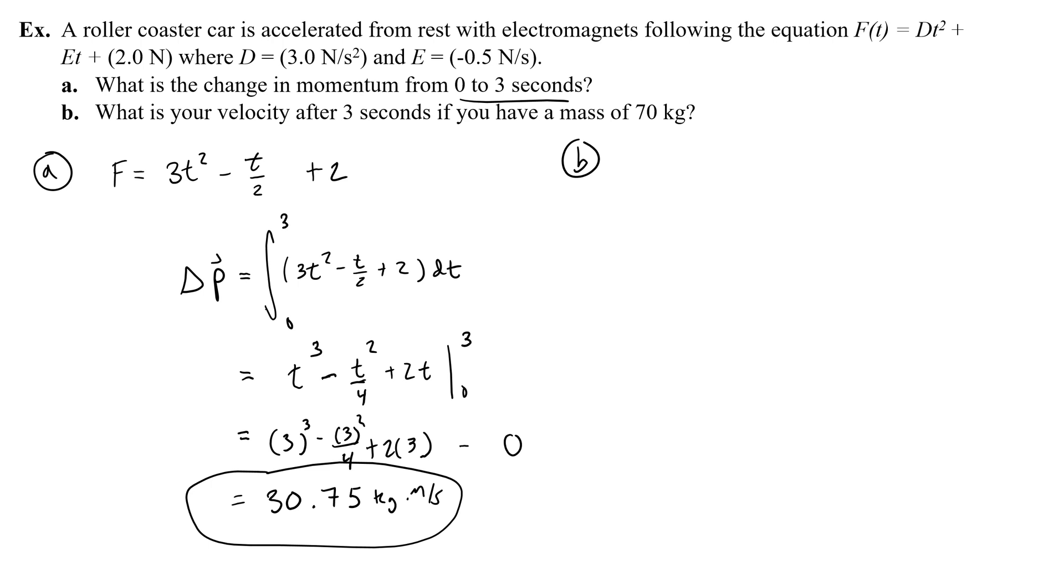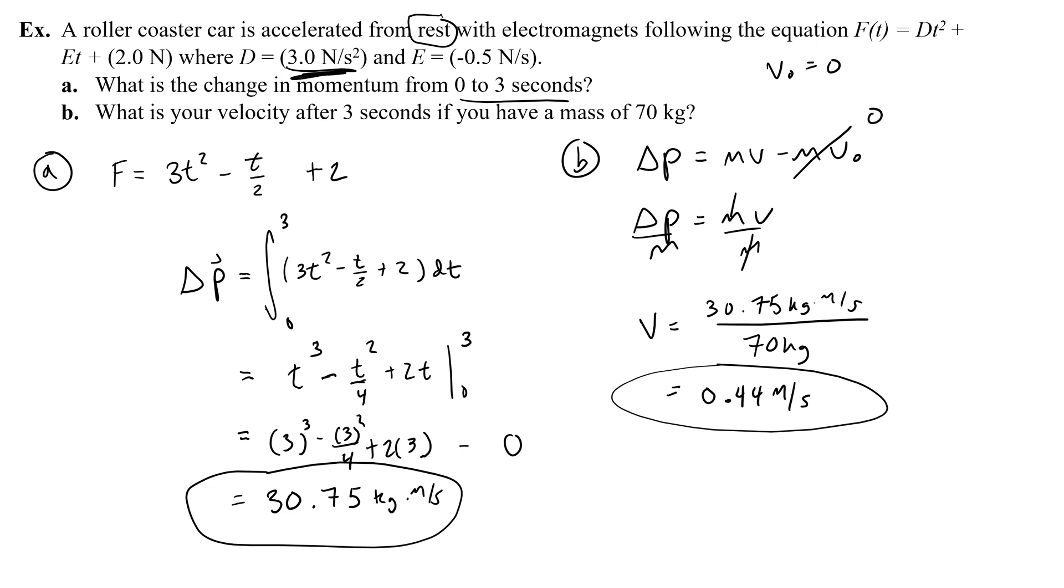So what does that mean for part B? What is our velocity after 3 seconds if you have a mass of 70 kilograms? Well the same thing we were doing before, the change of momentum is mv minus mv naught, and in this particular problem it tells you that you accelerate from rest. So that tells you your initial velocity is 0, and you can get rid of this term. So the velocity is really just going to be that change of momentum divided by the mass. So the velocity is the change of momentum, 30.75 kilogram meters per second, divided by a mass of 70 kilograms, which gives you a really small number, 0.439 meters per second. So this is not very fast, and I probably should have made d a lot bigger to give you a quicker acceleration.